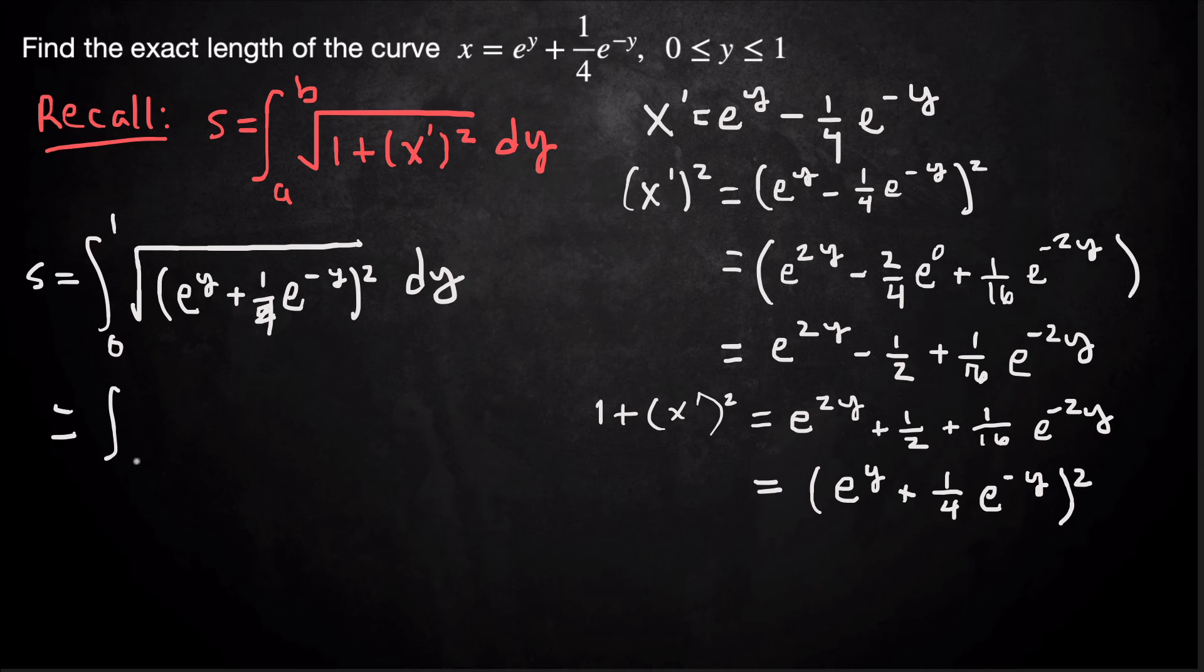The square and the radical cancel. So I just get integral from 0 to 1, e^y + (1/4)e^(-y) dy.